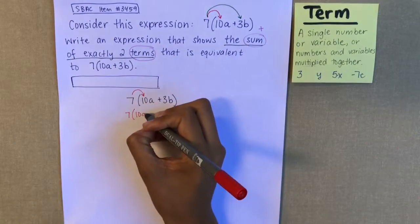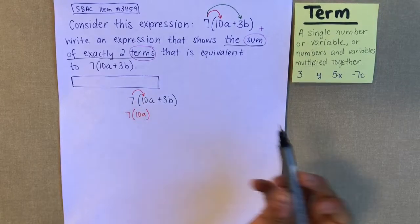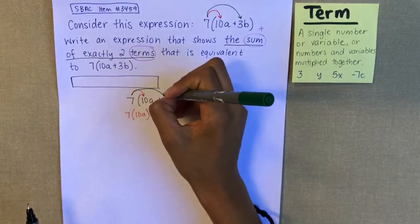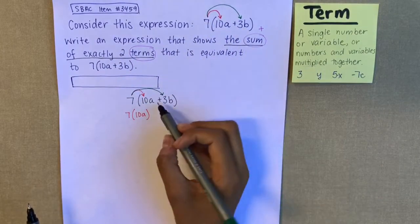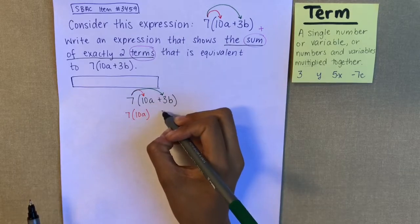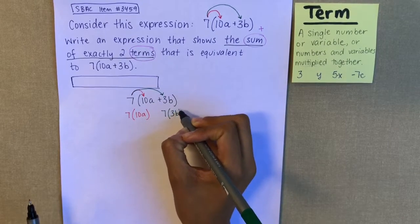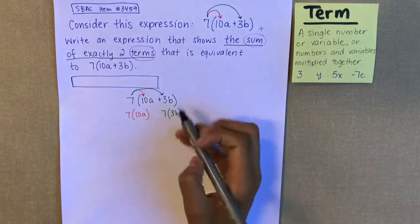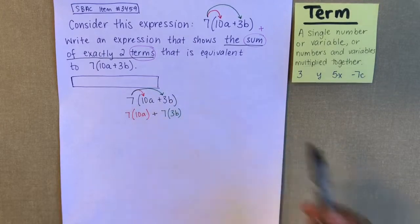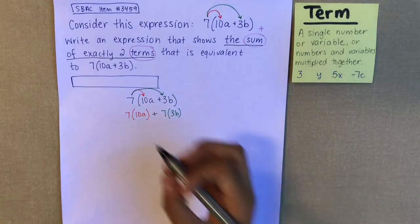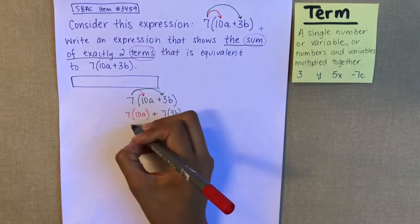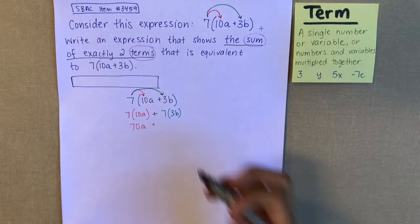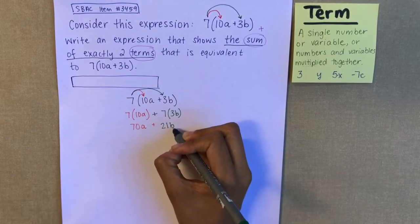Using the distributive property: 7 times 10a — I'm going to use red for this term — plus 7 times 3b — I'm going to use green for the b terms. Remember, whatever sign you have between the two terms stays the same. Now I can simplify: 7 times 10 gives me 70a, plus 7 times 3 gives me 21b.